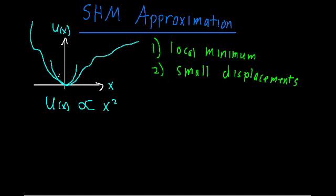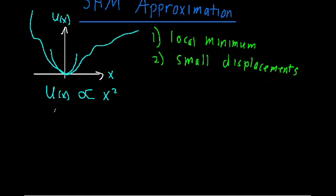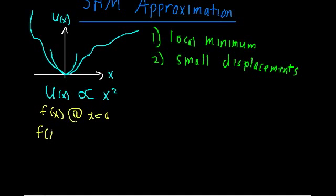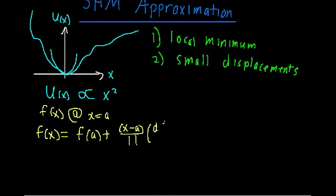So what we're going to do is find an approximation of this potential energy curve about this minimum using a Taylor series approximation. The general formula for a Taylor series expansion of a function f of x around the point x equals a is: f of x equals f evaluated at a, plus x minus a divided by 1 factorial, times the first derivative of f with respect to x, with this derivative term evaluated at x equals a.